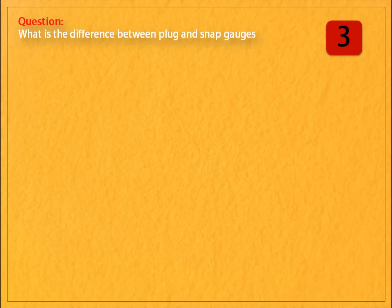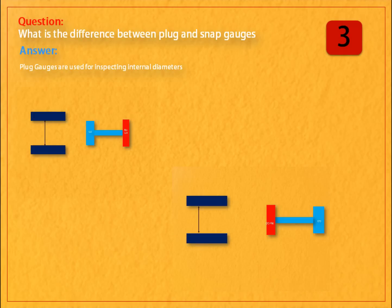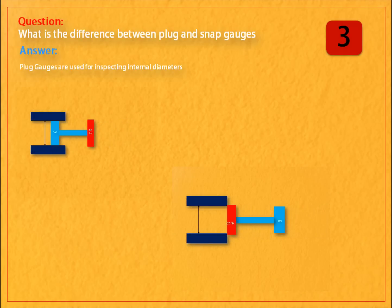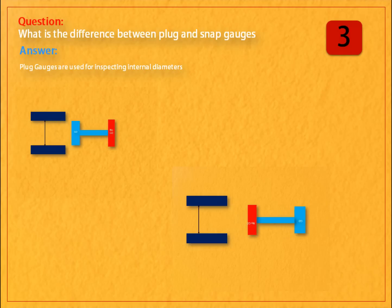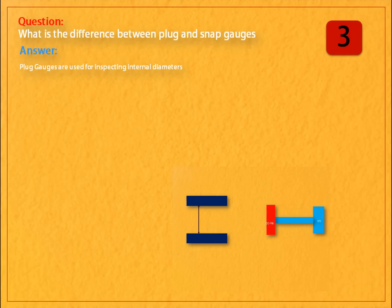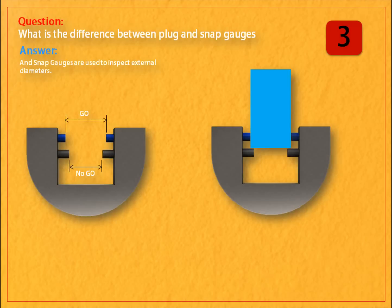Question: what is the difference between plug and snap gauges? Answer: plug gauges are used for inspecting internal diameters, and snap gauges are used to inspect external diameters.